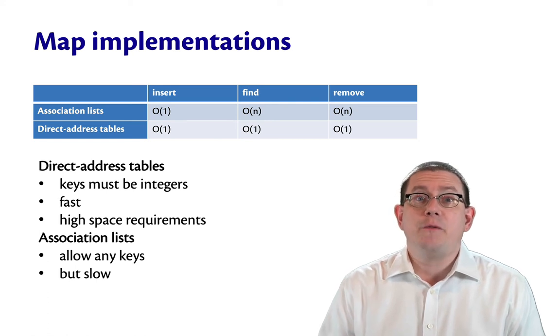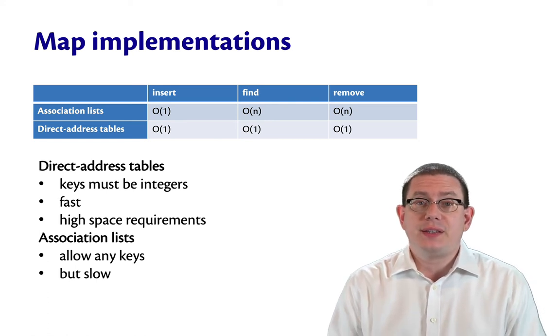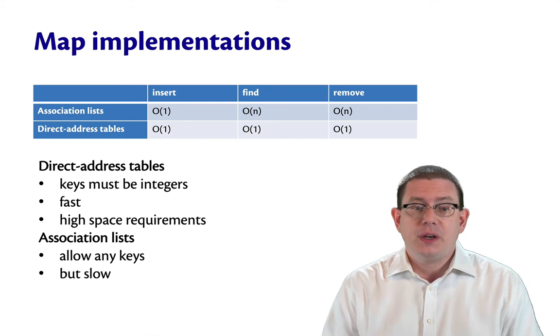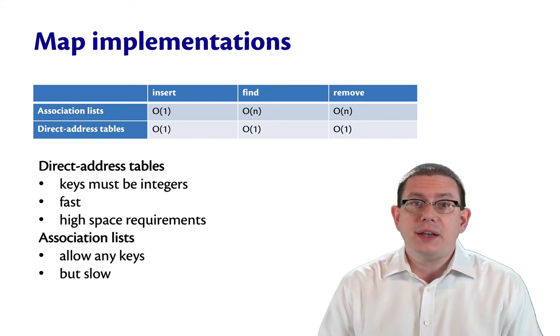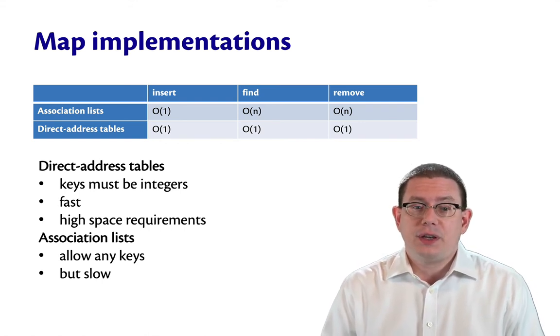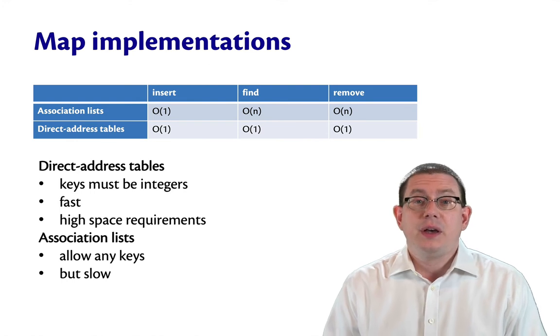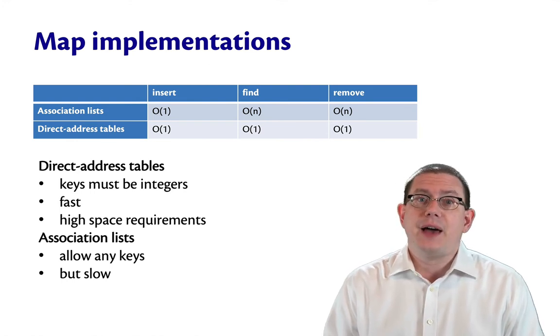We want the best of both worlds between direct address tables and association lists. Direct address tables, because of the array implementation, give us constant time operations. Association lists allow us to have any type of keys.